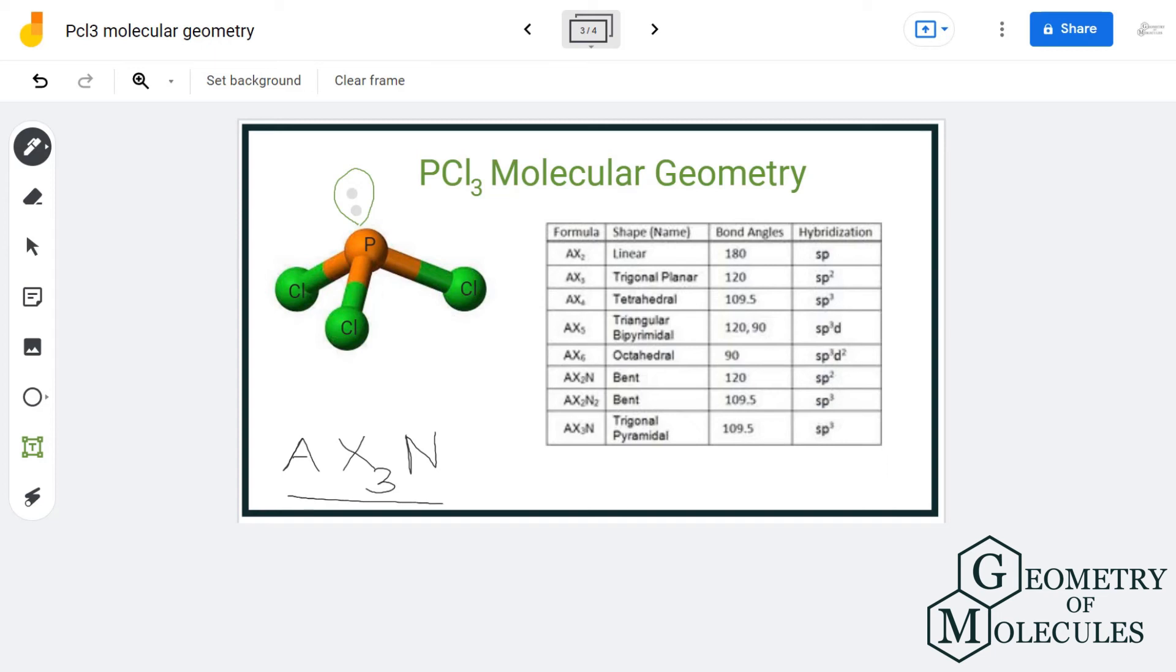If we refer to this table, we can see that molecules with the AX3N formula have trigonal pyramidal shape with bond angle of 109.5 degrees and sp3 hybridization.